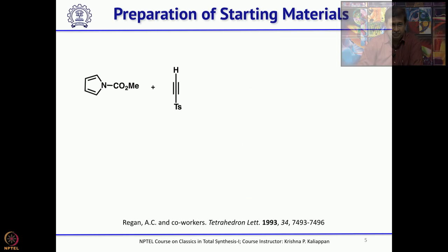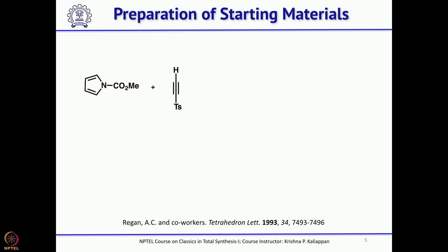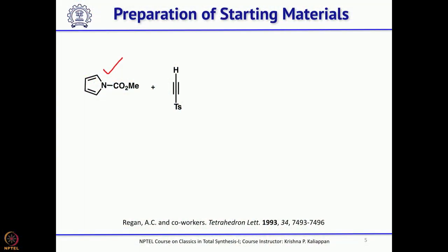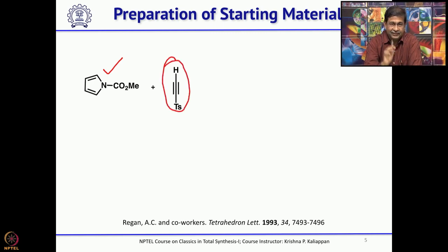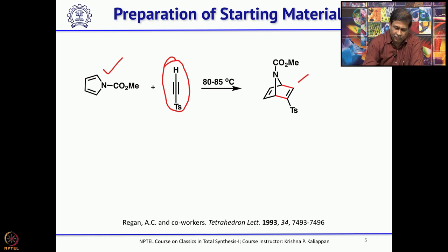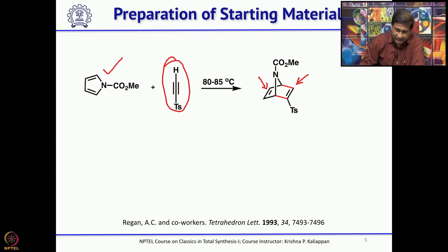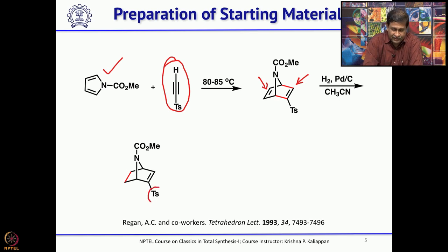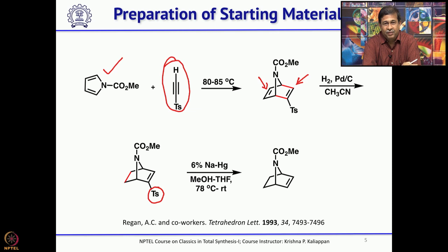The aza-bicyclo[2.2.1] system is prepared from pyrrole. If you treat pyrrole with chloromethyl formate, you get the diene, which on treatment with tosyl acetylene — where the triple bond acts as the dienophile — undergoes a Diels-Alder reaction to form the aza-bicyclo[2.2.1] system. This gives two double bonds: one electron-deficient on the right side and one electron-rich. The electron-rich double bond can be selectively reduced under standard hydrogenation conditions. The tosyl group is then cleaved under sodium amalgam conditions.